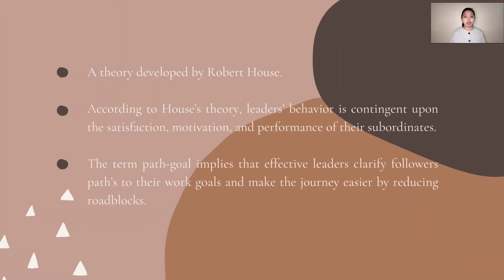Path-Goal Theory is a theory developed by Robert House, and according to this theory, leaders' behavior is contingent on the satisfaction, motivation, and performance of their subordinates. The goal of the leaders is to help followers identify their personal or individual goals as well as understand the organization's goals and find the path that will best help them achieve both.